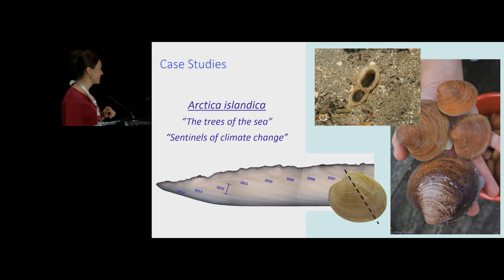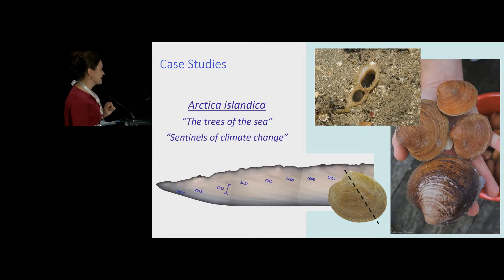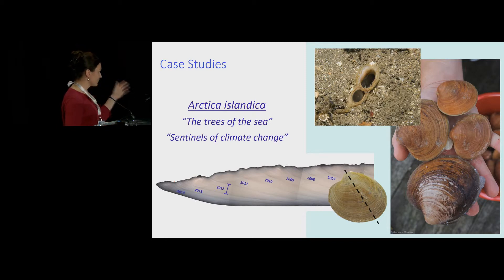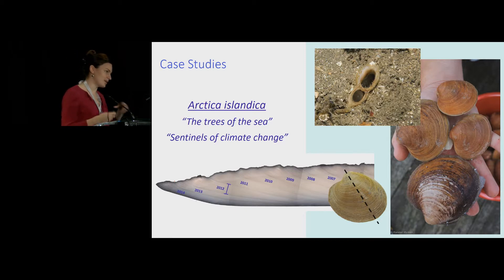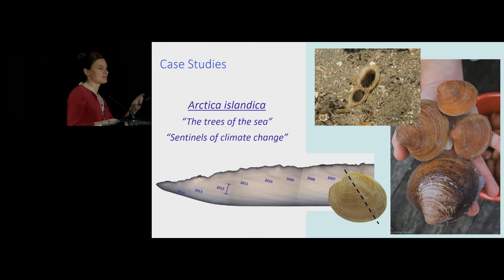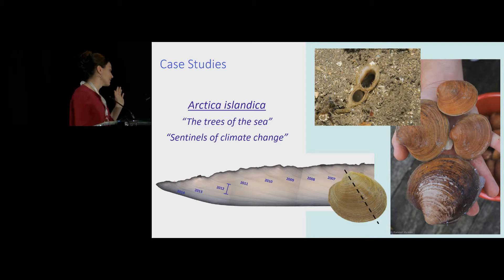I want to highlight this cross-section of a shell showing the growth increments. This shell was collected in 2014, so we can identify that last bit of growth as the year 2014, and then count back each annual increment year by year to establish a chronology. This is a rather young shell, so these increments are very clear and easily read. However, this species does exhibit an exponential decline in growth rates, so after the 30th or 50th year, these increments are really tiny and sometimes hard to see, distinguish, and measure accurately. They can also experience disturbance that causes them to lay down a growth line that looks similar to an annual growth line.